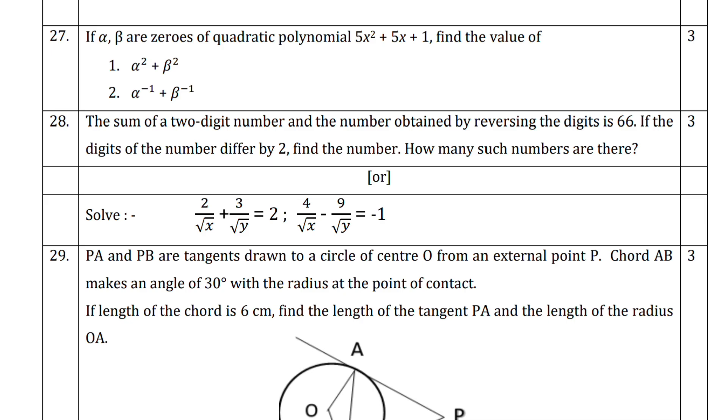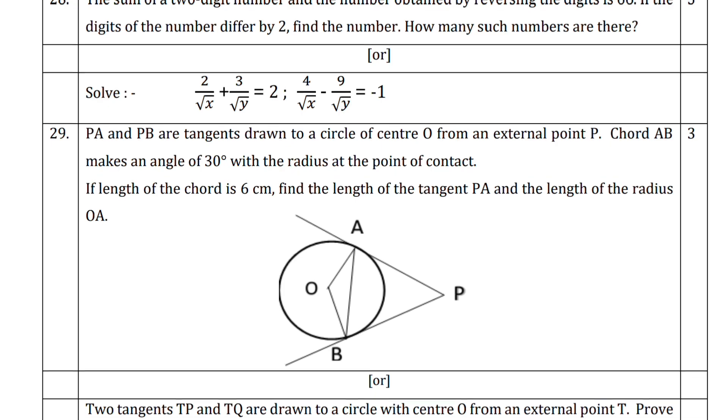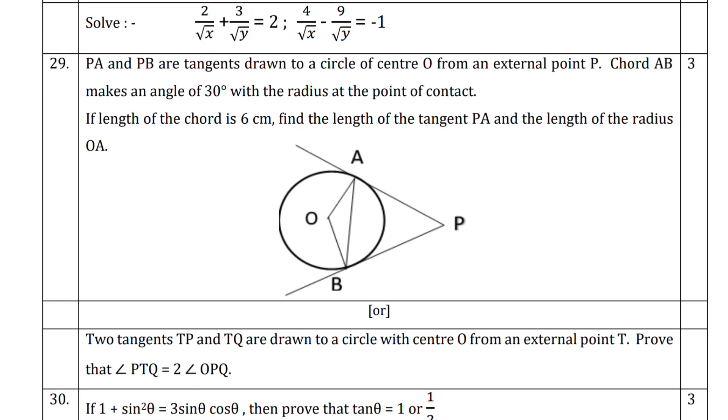If you see question number 27, it says that if alpha and beta are zeros of the quadratic polynomial 5x² + 5x + 1, find the value of these two expressions: alpha² + beta². It can be found out.